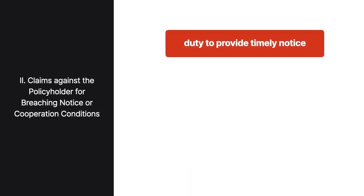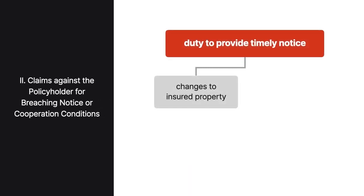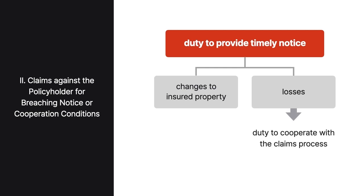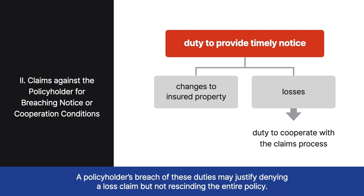A policyholder's other policy duties may include providing timely notice to the insurer of changes to insured property or losses. In addition, for losses, policies typically require policyholders to cooperate with the claims process. If a policyholder breaches one of these policy duties, the insurer may be able to deny the loss claim, but likely won't be able to rescind the entire policy.